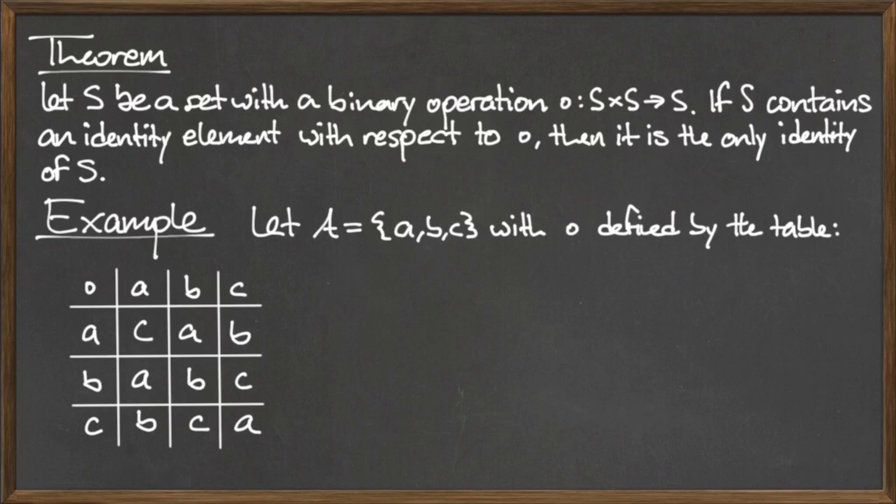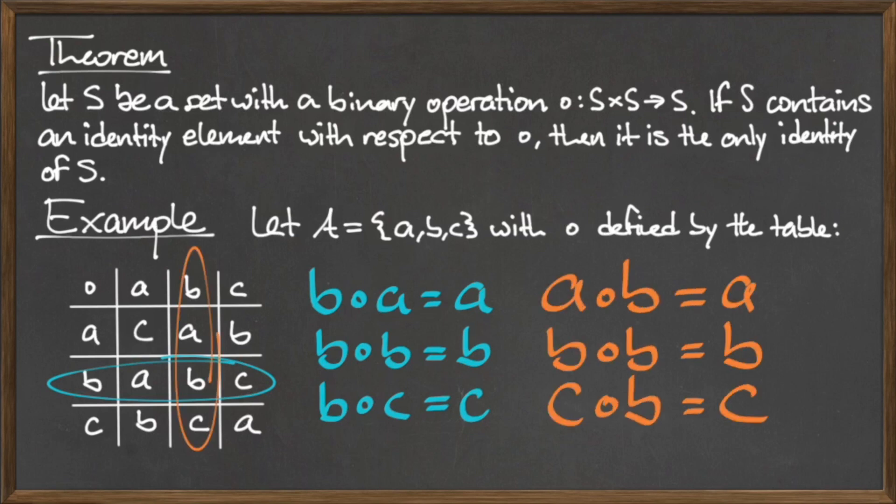Consider the set A containing the elements little a, little b, and little c, along with the binary operation dot defined by the following table. By observation, the element b appears to be the identity for this set. To confirm this, we apply the binary operation with each element and b, our candidate for the identity. We must make sure to do this in both directions. For example, we need to compute b dot a and a dot b to make sure that the answers are the same. After computing each of these binary operations, we see that the element b is in fact the identity element with respect to dot.